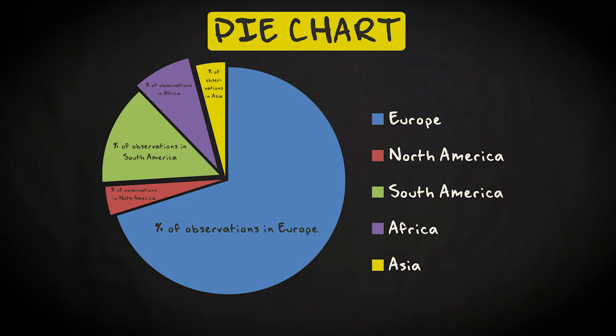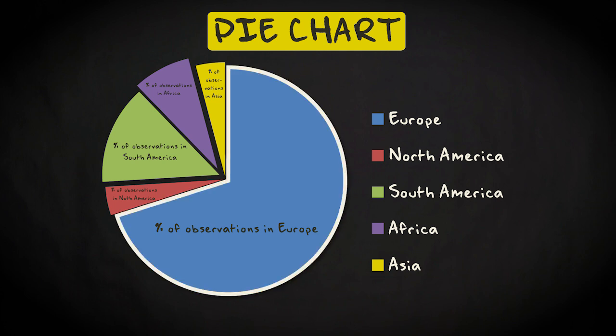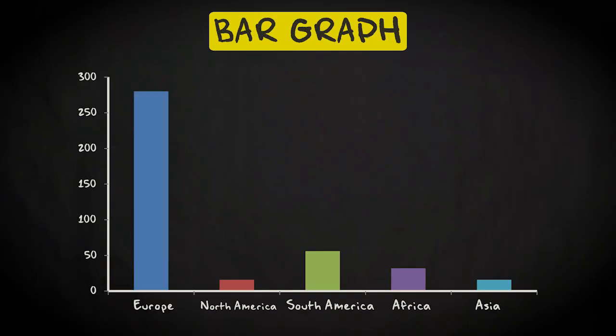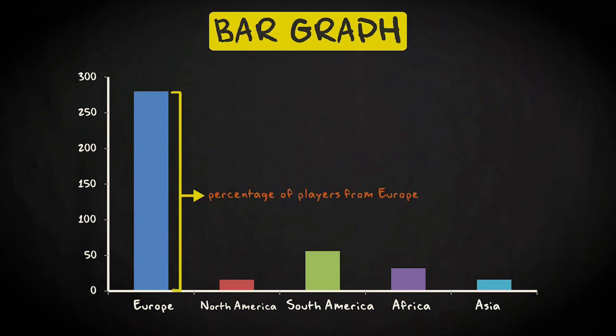You can see at a glance that almost three-quarters of all the football players come from Europe. Another way to summarize the same data is with a bar graph, which also shows you very clearly how the data are distributed over the various categories of your variable. The height of the bars represents the numbers of observations in each category.